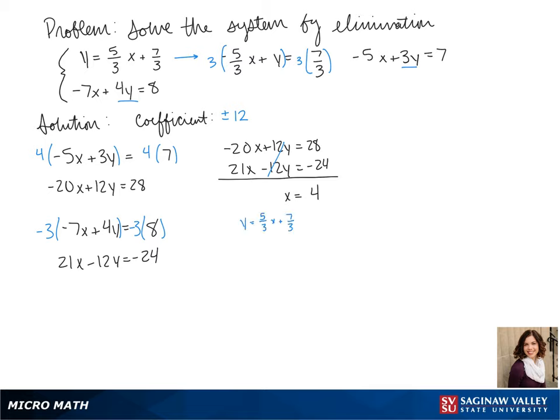So now we can take 4 and plug it in. We would normally plug it in where it's already solved for y, but since our 4 doesn't cancel with our denominator, that might not be the easiest choice. So we can pick our second equation, negative 7 times 4 plus 4y equals 8. This gives us negative 28 plus 4y equals 8.